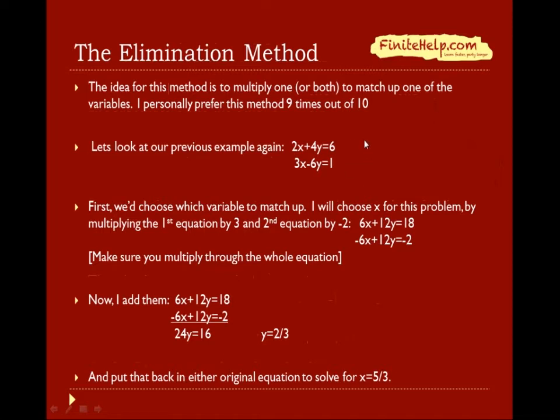Here we are going to look at the same example again. We first will choose which variable we want to match up. Here, I'm going to match up the x. I'm going to do that by multiplying the first equation by three and the second equation by negative two. And here is what they are going to be. Make sure you multiply through the entire equation. A common mistake is to multiply only the x and y's and forget to multiply the constant.